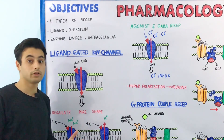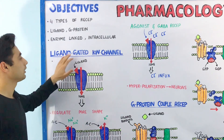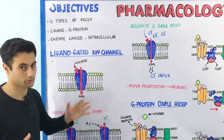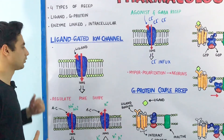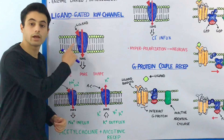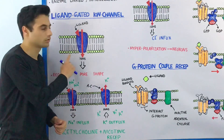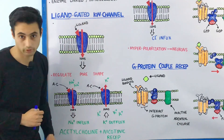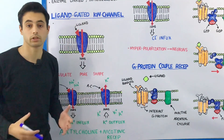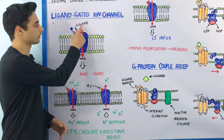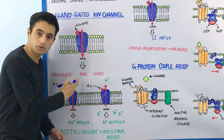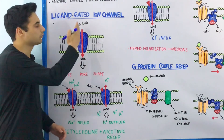Let's start with the ligand-gated ion channels — how these channels perform their action when a drug binds with them. Have a look at this diagram. These receptors have the extracellular portion onto which the ligand will bind. The ligand can be any molecule; it can be a hormone or it can be a drug. When the ligand binds with the receptor, it will cause regulation of the pore size.